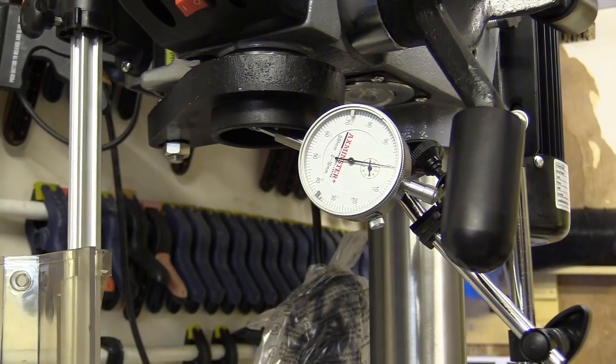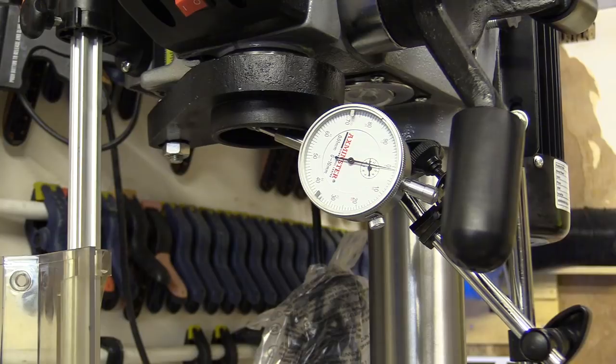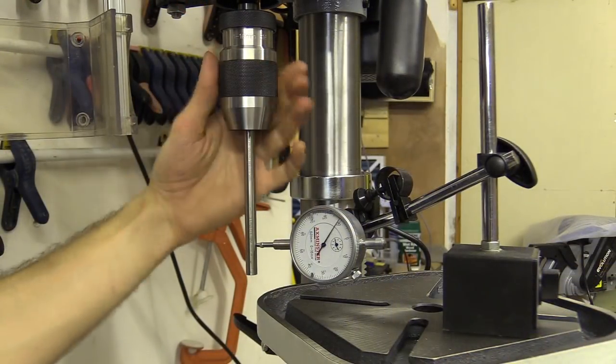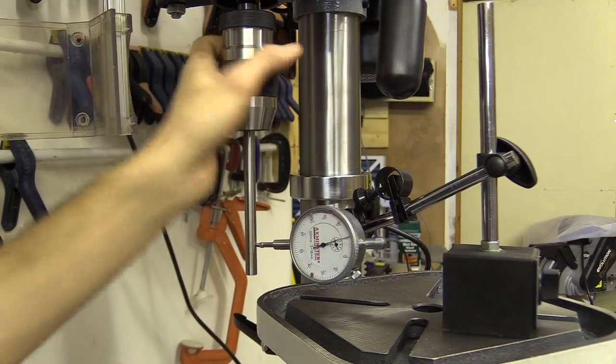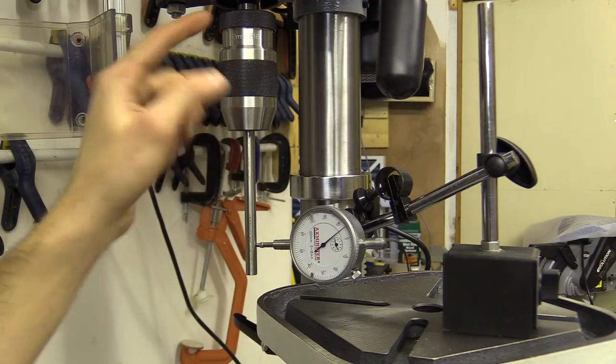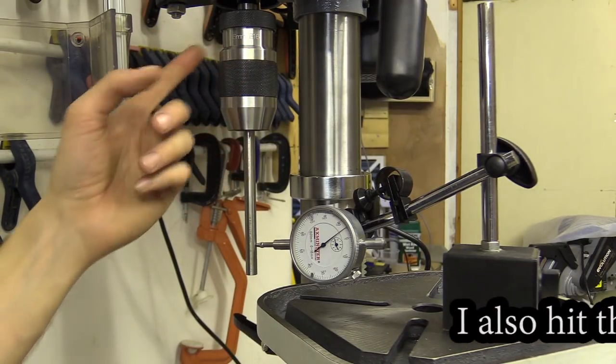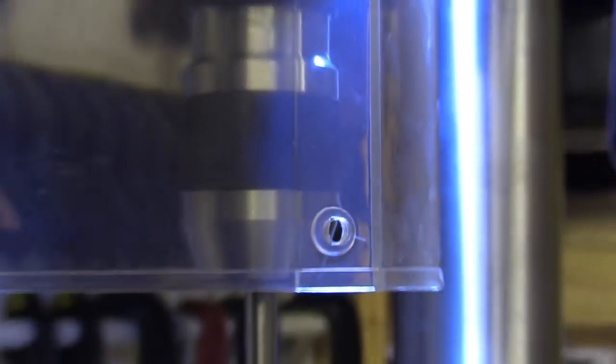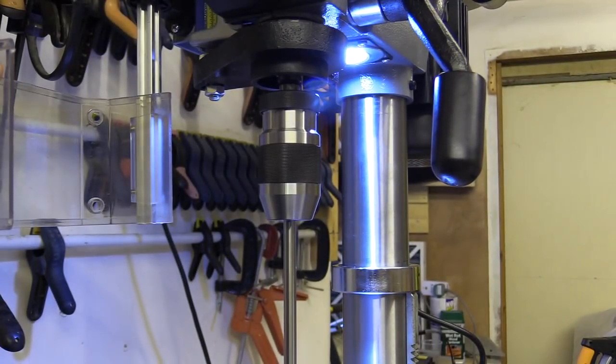I also used the dial gauge to check the run out on the morse taper on the main shaft of the drill. This is where you'd normally fit the chuck into. This was pretty good with a run out of only 0.02mm, but when I fitted the chuck and checked the run out on a piece of precision round engineering steel I got a reading of 0.3mm. This is machine steel and clearly it's the chuck or the morse taper. Ok I don't like the chuck, I'm not impressed with that.